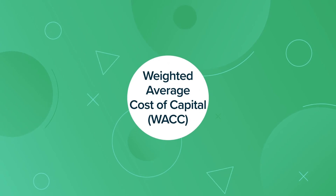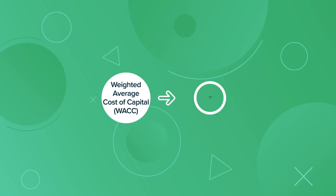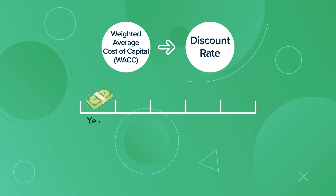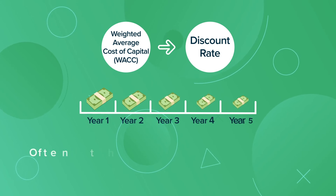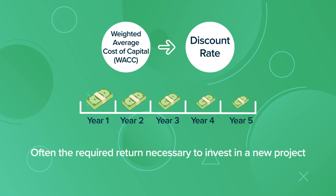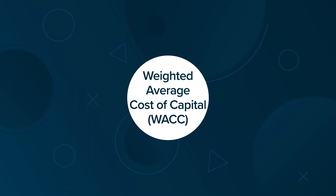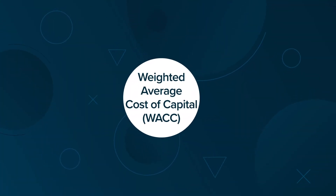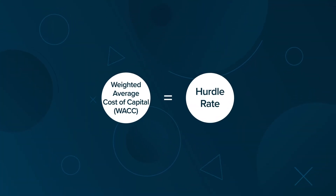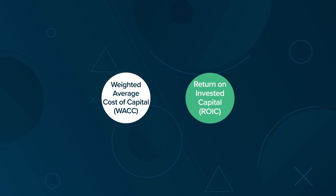The weighted average cost of capital is often used as the discount rate when calculating the value of future cash flows, and is often the required return necessary to invest in a new project. The weighted average cost of capital is also often the hurdle rate compared against a company's return on invested capital, or ROIC.